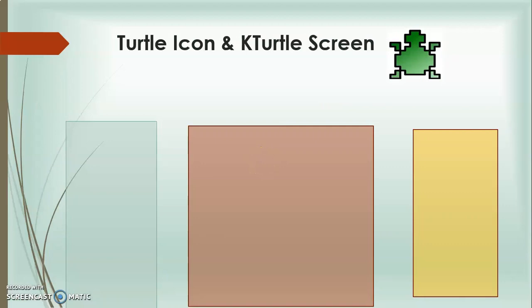Now I will tell you how the K-Turtle screen looks like. First of all, look here — it is the turtle icon. This is the turtle to which you will give instructions, and it will make a triangle, circle, or star for you — whatever you tell it, it will make for you.